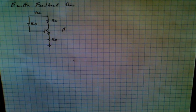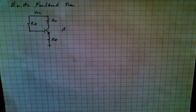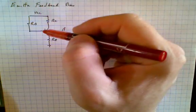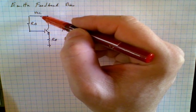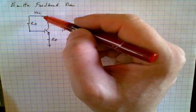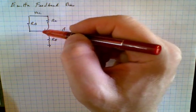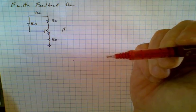Another form of feedback bias is emitter feedback bias. This circuit looks very similar except that the base resistor, instead of going to the collector, goes directly to the supply voltage. Now you'll notice that there is no connection between the emitter and the base, so you wonder how this is called emitter feedback bias.